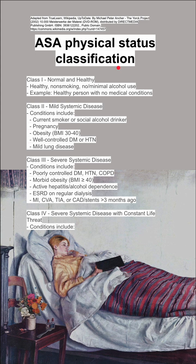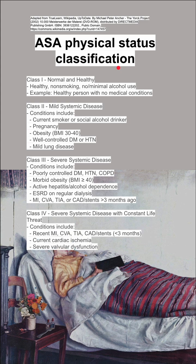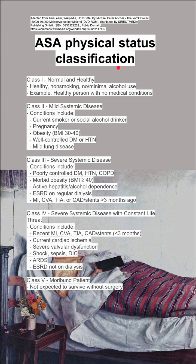Class 4 indicates severe systemic disease with a constant threat to life. Conditions include a more recent MI, CVA, TIA, or stents less than three months ago, current cardiac ischemia, severe valvular dysfunction, shock, sepsis, DIC, ARDS, or end-stage renal disease not on dialysis.